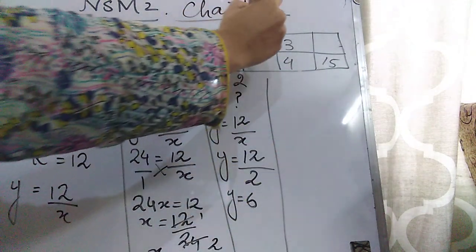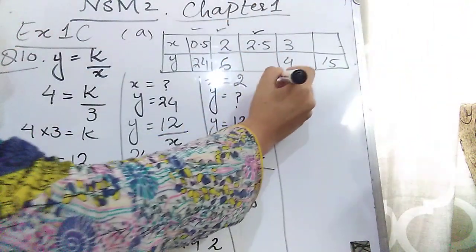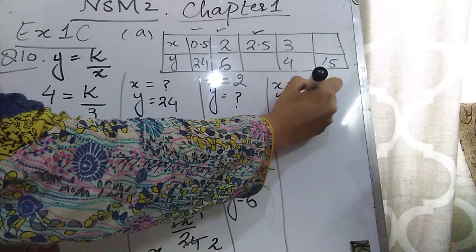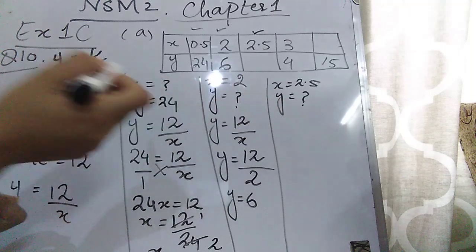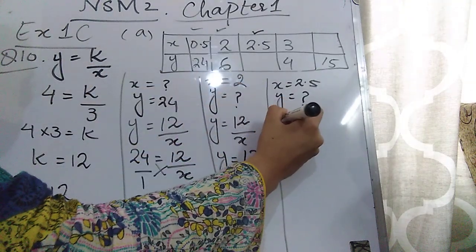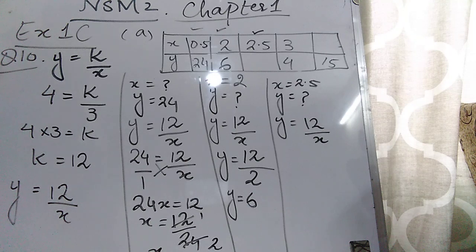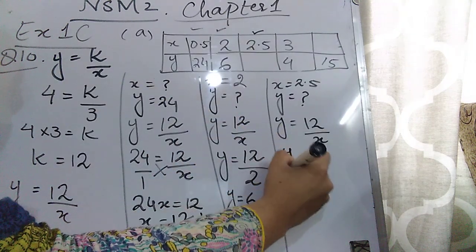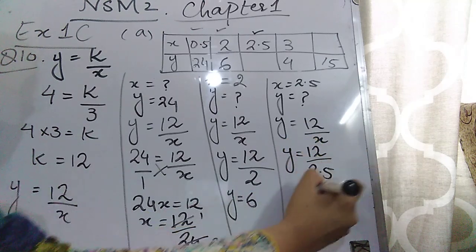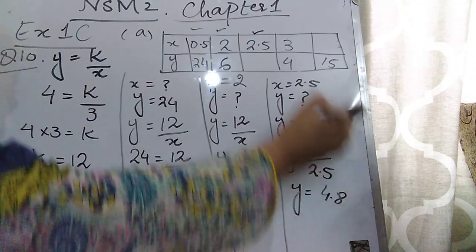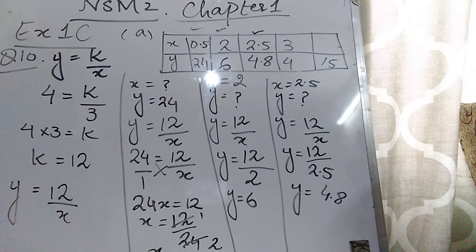In the next column, the value of x is given as 2.5 and you have to find the value of y. Again use the main equation y = 12/x. Put x = 2.5: y = 12/2.5. When you divide, you get 4.8. So the value of y is 4.8.